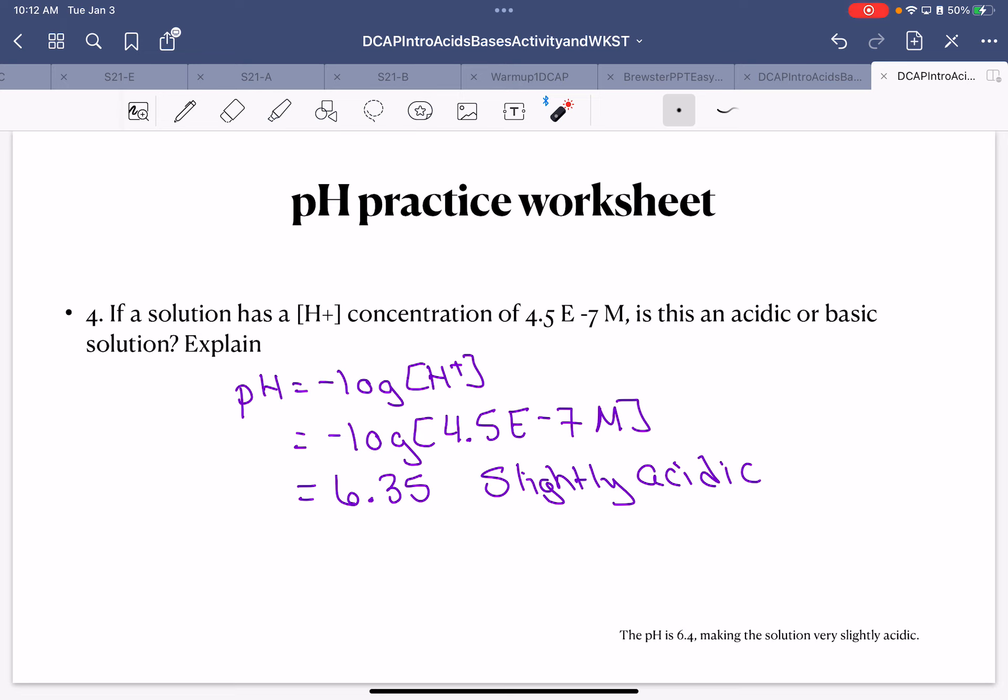All right, so this one was pretty much straightforward. It gave me the molarity straight up. I basically plug it in the equation, and then I've got to interpret that number. So it's 6.35. We know that 7 is neutral, anything less than 7 is acidic, anything greater than 7 is basic. And that's why this is slightly acidic, this is a weak acid.